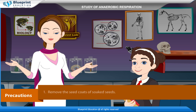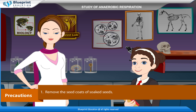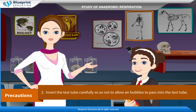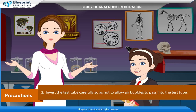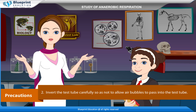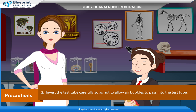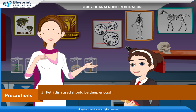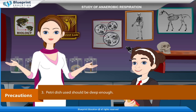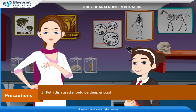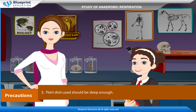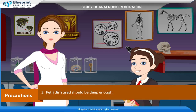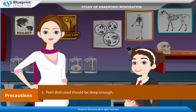Precautions: Remove the seed coats of soaked seeds. Invert the test tube carefully so as not to allow air bubbles to pass into the test tube. The Petri dish used should be deep enough. Thank you ma'am for this knowledgeable experiment.